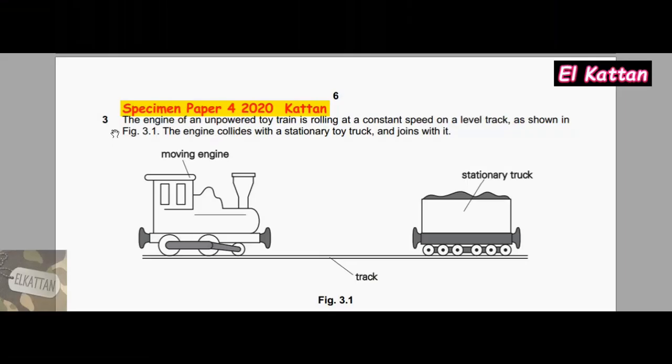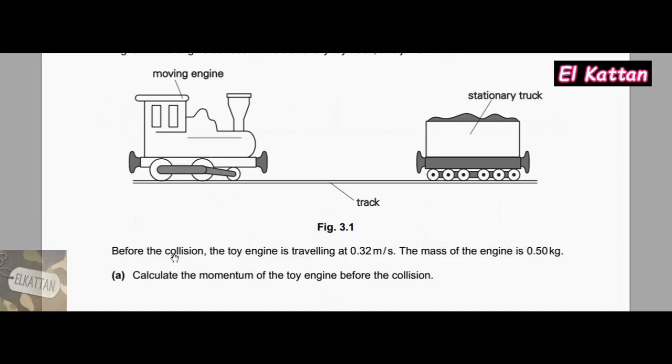Hey guys and welcome to our physics series. Today we have specimen paper 4, 2020, question 3. The engine of an unpowered toy train is rolling at constant speed on a level track as shown in figure 3.1. The engine collides with a stationary toy truck and joins with it.